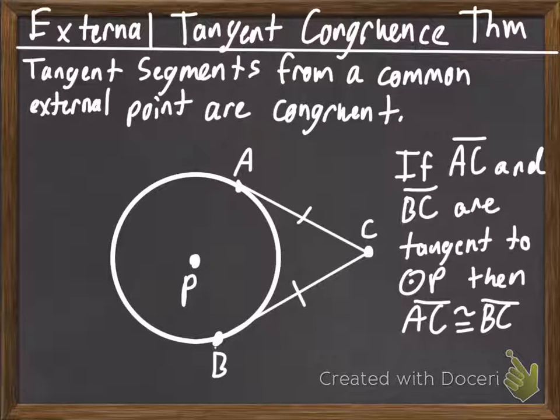So, our external tangent congruence theorem says that tangent segments from a common external point are congruent. And we have our picture, we have circle P, we have A and B, which are points of tangency, and we have point C, which is an external point.